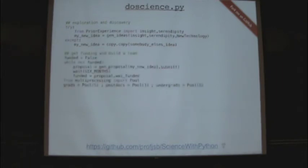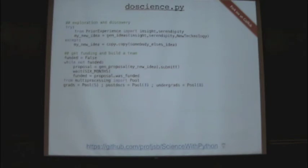We have to get funding, so we assume that we're not funded at the beginning, and then we enter this while loop, and we write a proposal and submit it. We wait about six months. Then we hear it doesn't get funded, usually, and then we go back into the while loop and keep on writing. You haven't learned about multiprocessing yet, but essentially it's like a kind of parallelism that's not inside my Python — it's actually built into the native package.